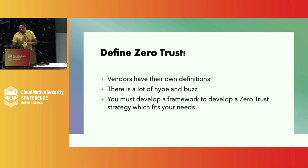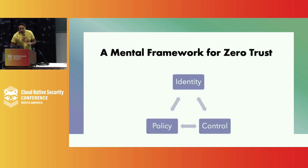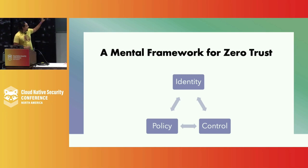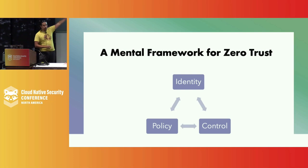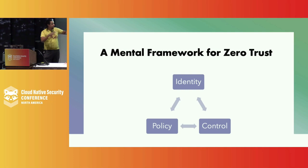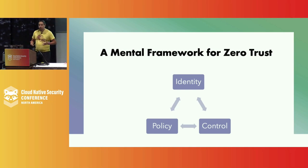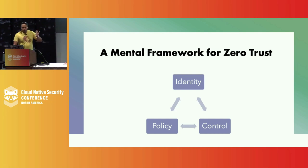One framework I've been working on with colleagues uses the same approach as the CIA triad, but for zero trust: identity, policy, and control. When you establish this, it gives you a way to evaluate products — does it give us identity? Does it make our identity story better? Does it allow us to manage at scale? Is it a policy thing — can we drive and create rules around it? From the control side, is it automatable, observable, manageable at scale?